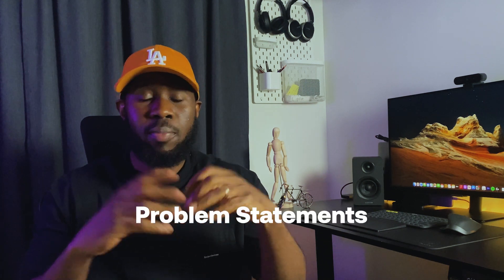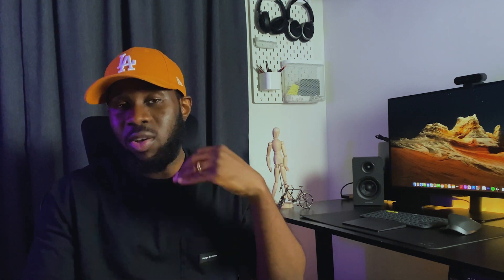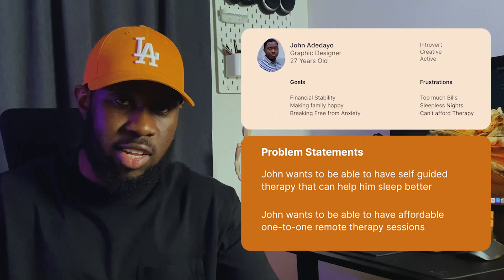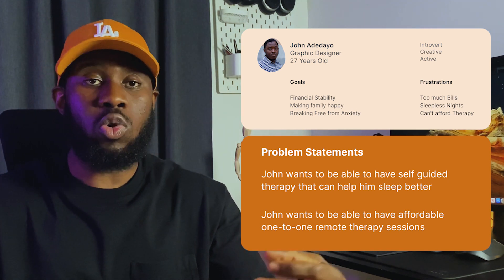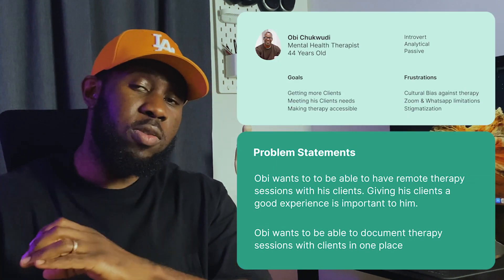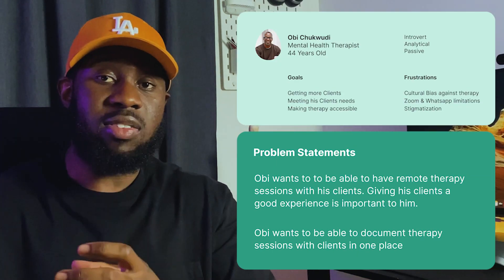Other exercises you can carry out at the problem definition stage include empathy mapping, user journey maps and problem statements. Again, this depends on your research objectives and the scope of your project. But one important thing is to make sure you have a clear problem statement at the problem definition stage, as this helps you understand how to go into ideation. For this project, I have two problem statements: the first from the client's point of view — finding a therapist and getting self-guided therapy — and the second from the therapist's point of view, which is trying to find clients online.